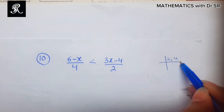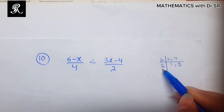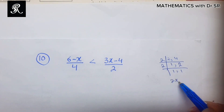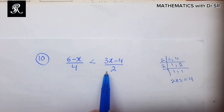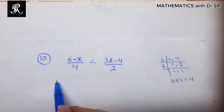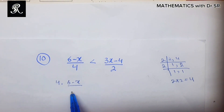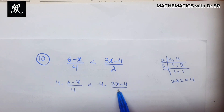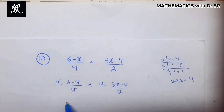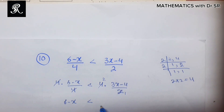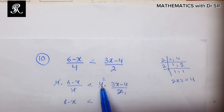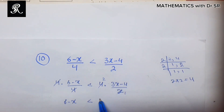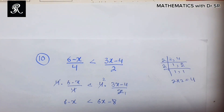The least common multiple is 4. We will multiply throughout the inequality by this LCM: 4 times (6 minus x)/4, strictly less than 4 times (3x minus 4)/2. The 4s cancel out and we are left with 6 minus x strictly less than 2 times (3x minus 4), which gives 6 minus x strictly less than 6x minus 8.